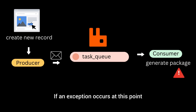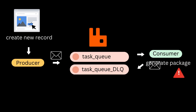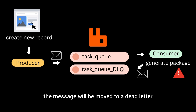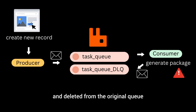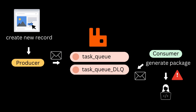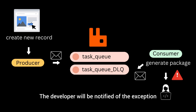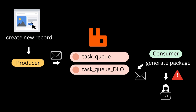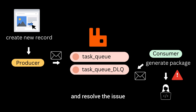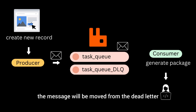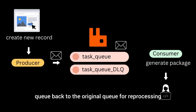If an exception occurs at this point, the message will be moved to a dead letter queue for reprocessing and deleted from the original queue. The developer will be notified of the exception and be expected to investigate and resolve the issue. Once the issue is resolved, the message will be moved from the dead letter queue back to the original queue for reprocessing.